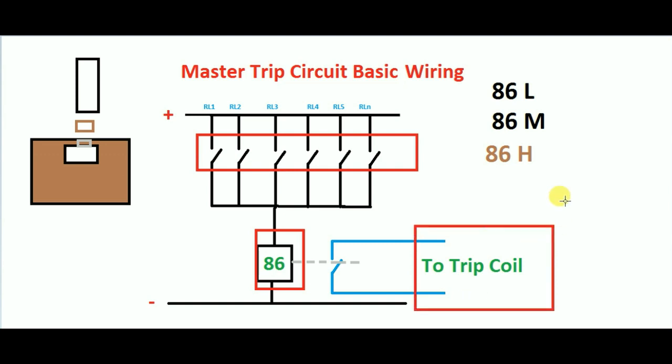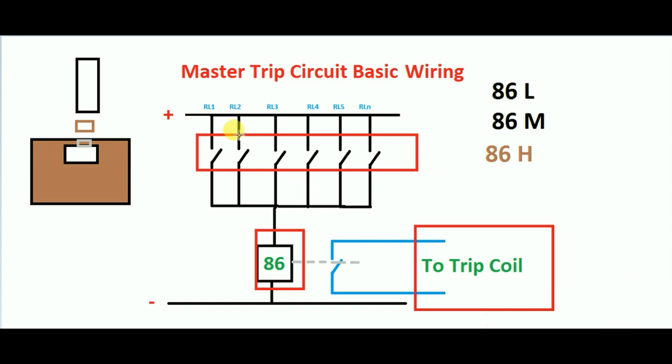If you have a master trip, you can close the generator breaker. If you have a master trip, you can charge the master trip. Then you will be able to reset the master trip. You can have multiple relay contacts and use the master trip circuits. If you have a master trip, you can use the accelerator.